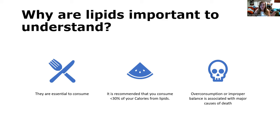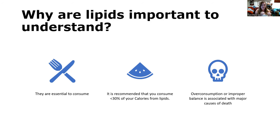Other countries like Spain and Greece, which consume more of a Mediterranean diet, have a much higher percentage of calories from lipids or fats, but their total calories might be a little lower. The types of lipids they consume come from things like sardines, cold-pressed extra virgin olive oil, and other healthier fats. Overconsumption or improper balance of essential fatty acids is associated with major causes of death like cardiovascular disease.